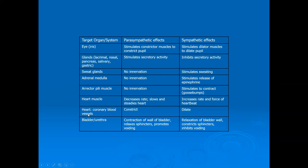Moving to the heart: sympathetic stimulation increases the rate and force with which the heart beats. Blood vessels going to the heart will dilate so that lots of blood, nutrients, and oxygen reach the cardiac muscle cells, enabling them to beat faster and harder to pump blood to your muscles so you can run away from the rottweiler.